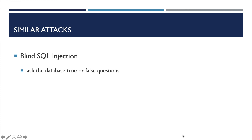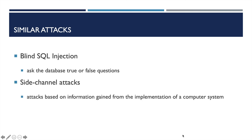Let's review padding oracle attacks by comparing it with some similar attacks. Padding oracle attacks work in a similar way as blind SQL injection, which is to ask the database true or false questions and find the answer based on the application responses. With padding oracle attacks, we don't ask the database, but send testing requests and seek for different responses to decrypt the source. In other words, padding oracle attacks are similar to side-channel attacks, which are attacks based on information gained by the implementation of a computer system, not the weakness in the implemented algorithm itself.